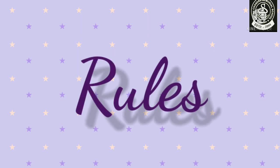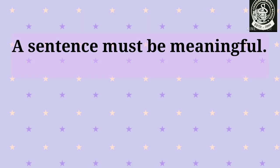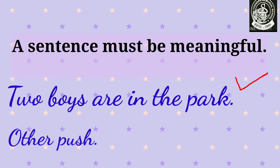Now let us learn some rules of a sentence. First of all, we should always keep in mind that a sentence must be meaningful. For example: 'Two boys are in the park.' Can we understand anything from this sentence? Yes, we can — the meaning of the sentence is absolutely clear to us, so this is a meaningful sentence.